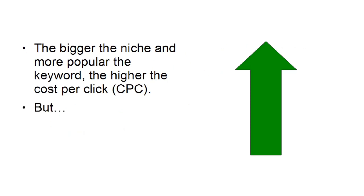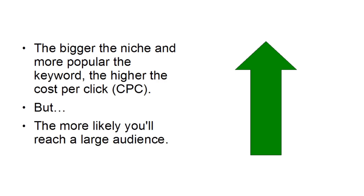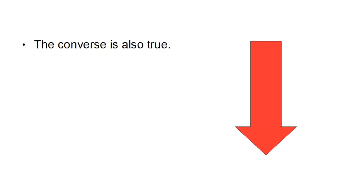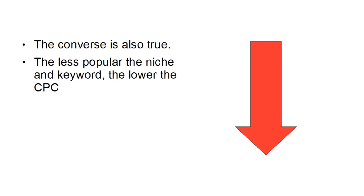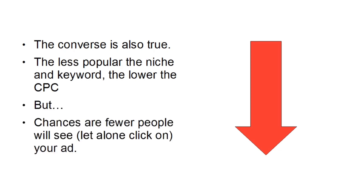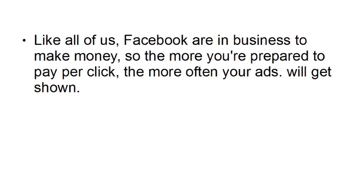There are pros and cons to both, of course. The bigger the niche and the more popular the keyword, the higher the CPC, but the more likely you're going to be able to reach a large audience. The converse is also true — the less popular the niche and keyword, the lower the CPC, but chances are that fewer people will see your ad, let alone click on it. Like most of us, Facebook are in business to make money, so the more you're prepared to pay per click, the more often your ads will get shown.